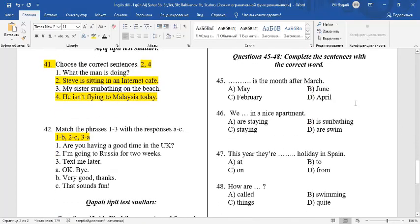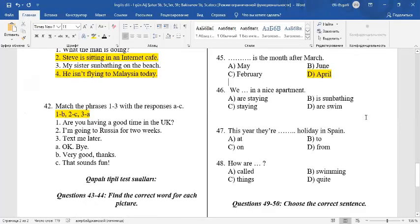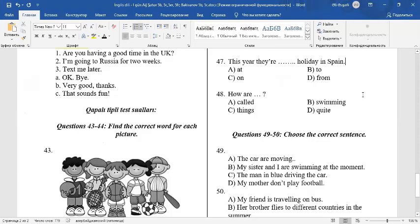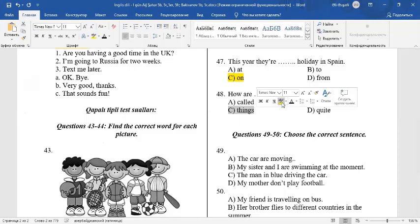Question 45. Choose a correct word. Is the month after March. April is the month after March. 46. We in a nice apartment. We are staying in a nice apartment. 47. This year, they are holiday in Spain. This year, they are on holiday. 48. How are things? It's a key phrase. You should remember it.